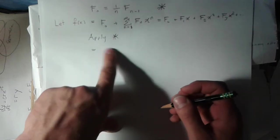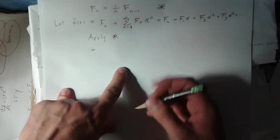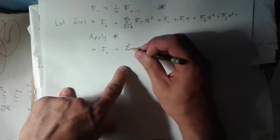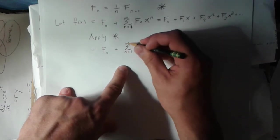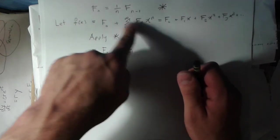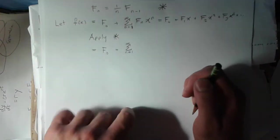If I apply star, I'm going to apply it not to this first term, but to all of the next terms in the series. So I'm replacing this f of n with 1 over n f of n minus 1.